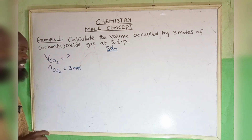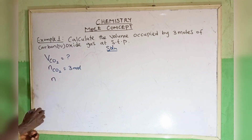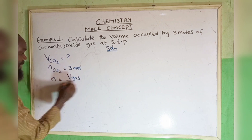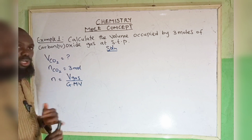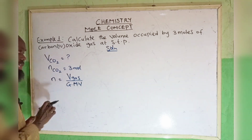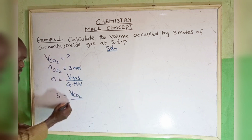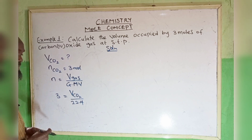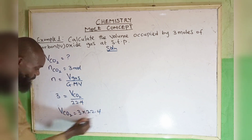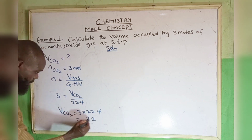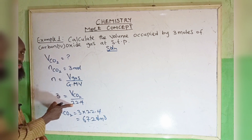Looking at our formulae, we find the one that contains both volume and amount: number of moles equals volume of gas divided by gram molar volume. We know the gram molar volume is either 22.4 dm³ or 22,400 cm³. So: 3 = V / 22.4. Cross-multiplying, volume of carbon dioxide equals 3 × 22.4 = 67.2 dm³.